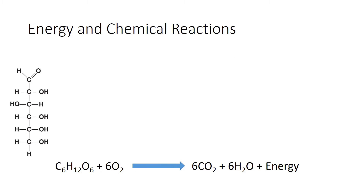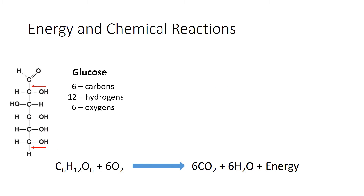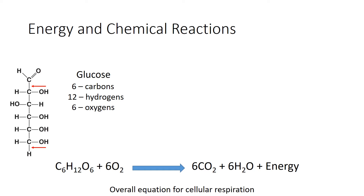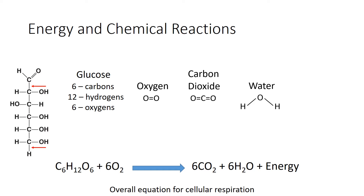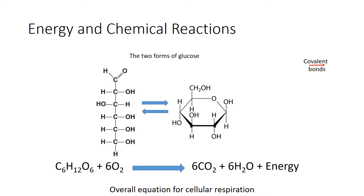Taking a closer look, here is the linear form for glucose, which contains six carbons, 12 hydrogens, and six oxygens, held together by covalent bonds. Those OH groups — the oxygen is also covalently bonded to the hydrogen. Remember, that is not a hydrogen bond; that is a covalent bond. The other molecules in cellular respiration — oxygen is made up of just two oxygen atoms, carbon dioxide has one carbon and two oxygens, and water is one oxygen and two hydrogens. As a reminder, glucose can appear as either the linear structure or the ring structure — either way, they're held together by covalent bonds and the carbons are the same, for instance carbon number three in both structures.